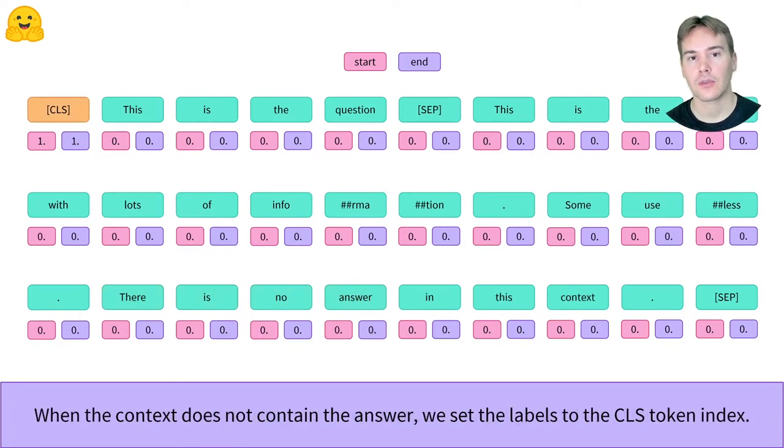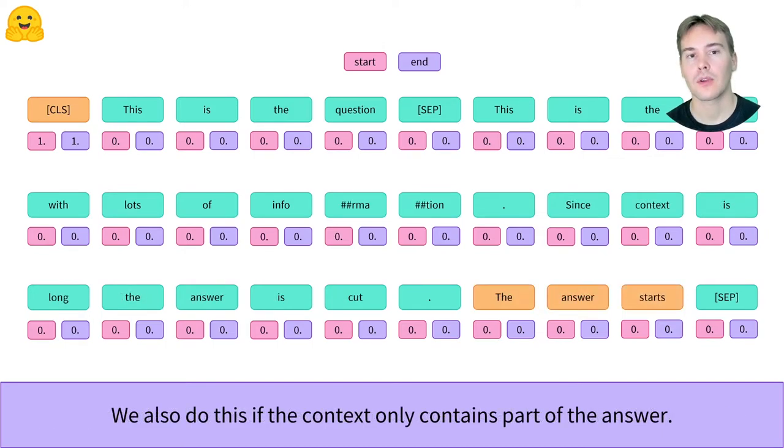If the context we have does not contain the answer, we set the two labels to the index of the CLS token. We also do this if the context only partially contains the answer.